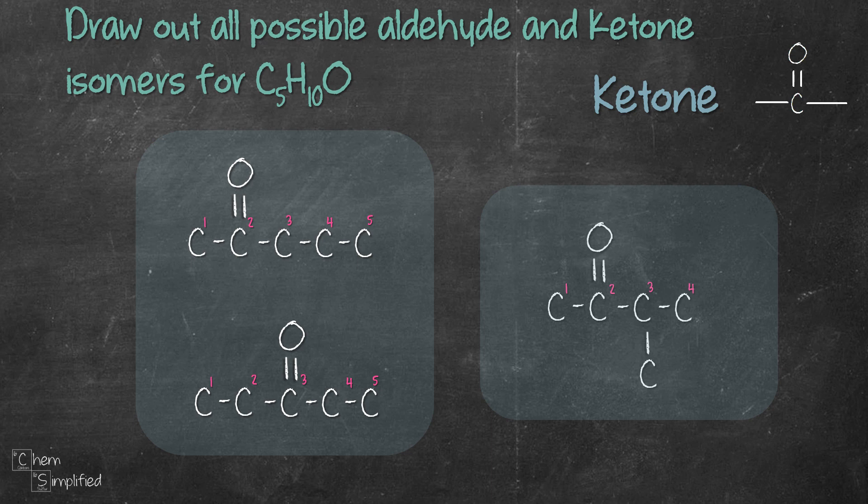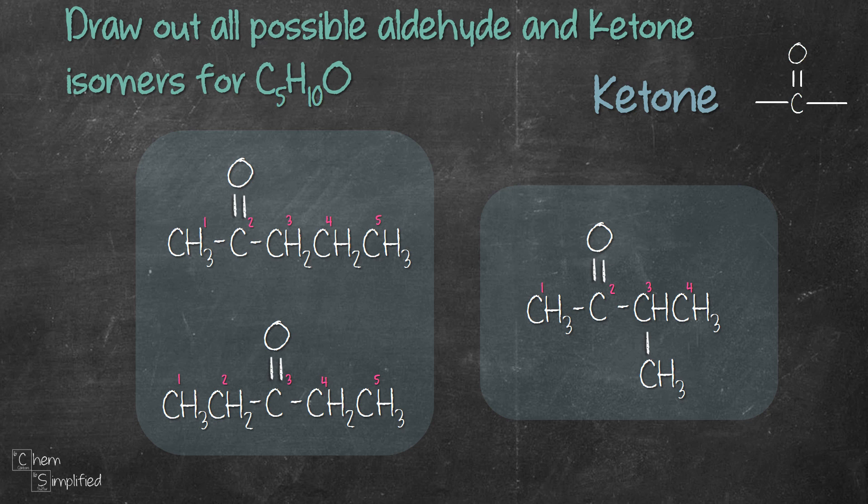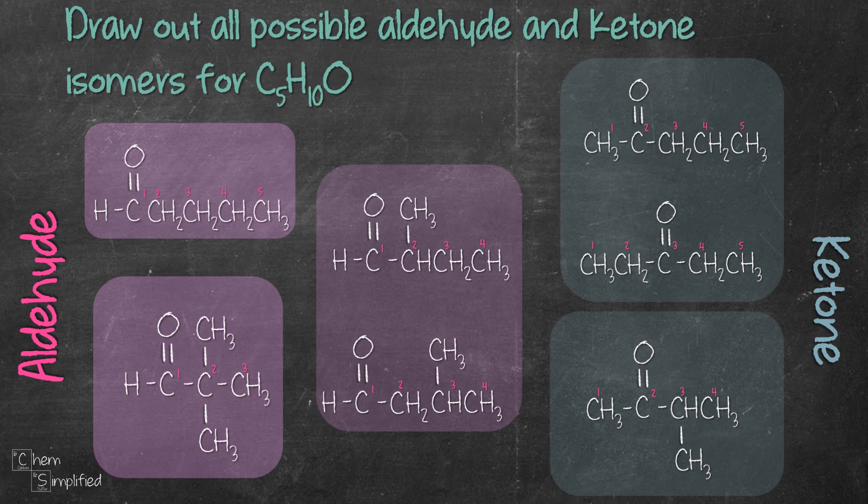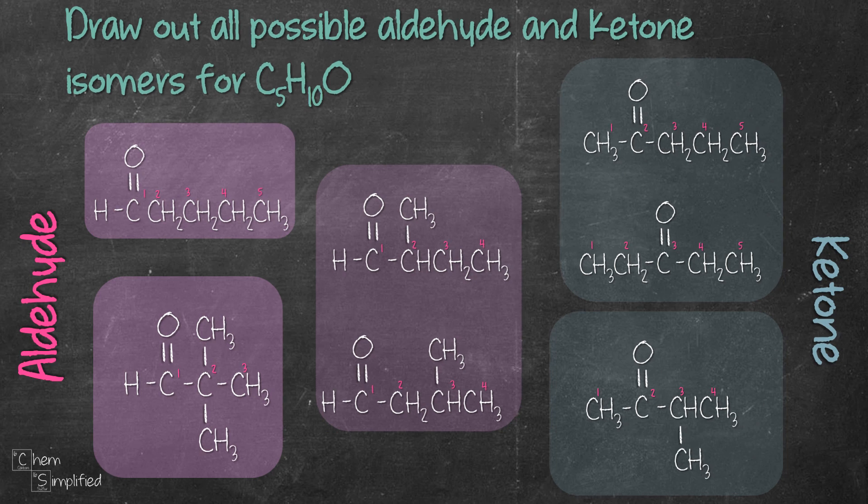Let's fill up the structure with remaining hydrogens and here's what we got. Here are our three ketones. To recap, we have a total of four aldehydes and three ketones for C5H10O.